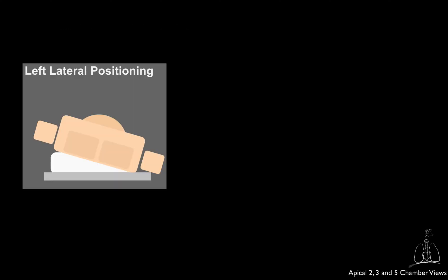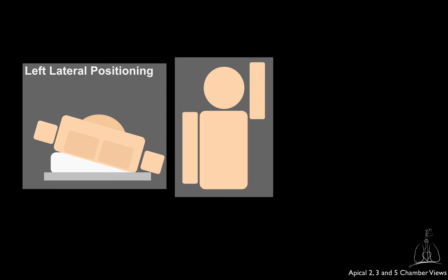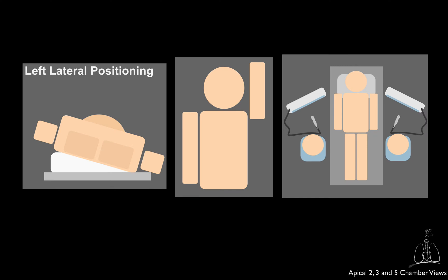For these views, the patient should be positioned on the left lateral side and if possible the left arm should be elevated and crossed under the patient's head to open the intercostal spaces and allow you to position the probe laterally. You can be standing on each side of the bed, but make sure that the machine is positioned in a way that you can access it to change settings or do measurements. Also ensure that you are in a comfortable position with the screen facing you.